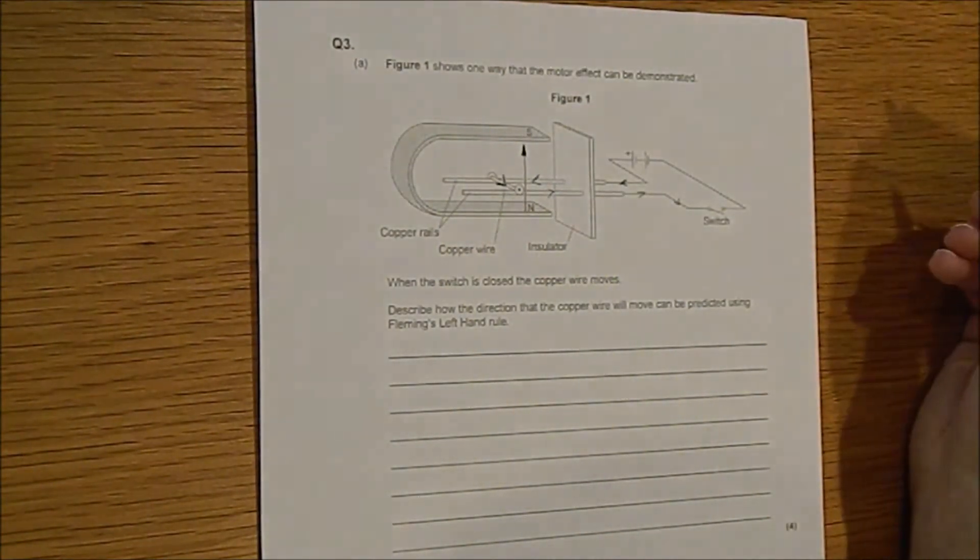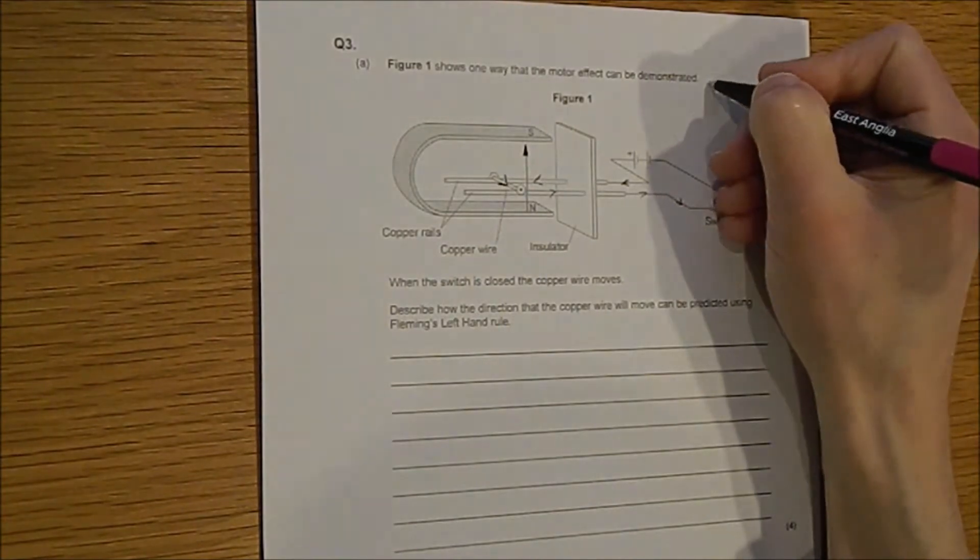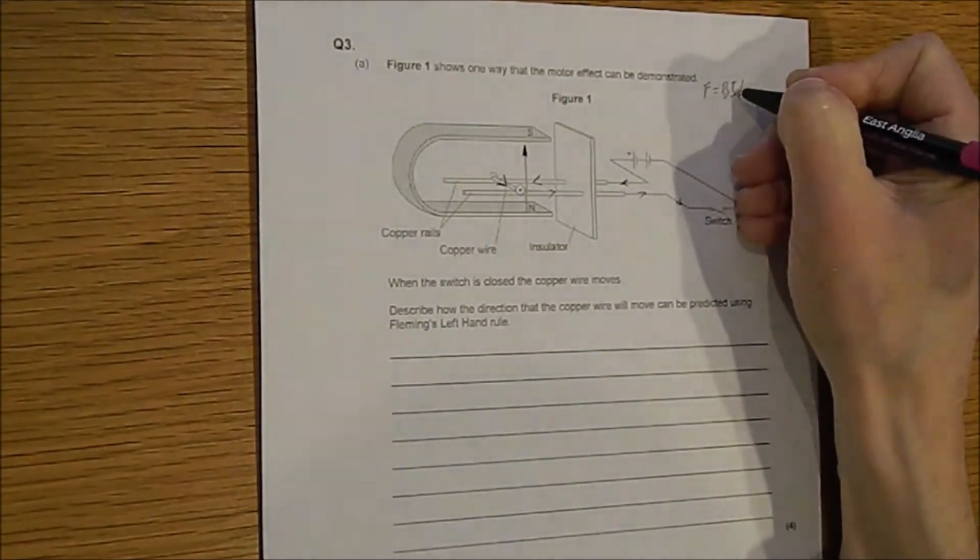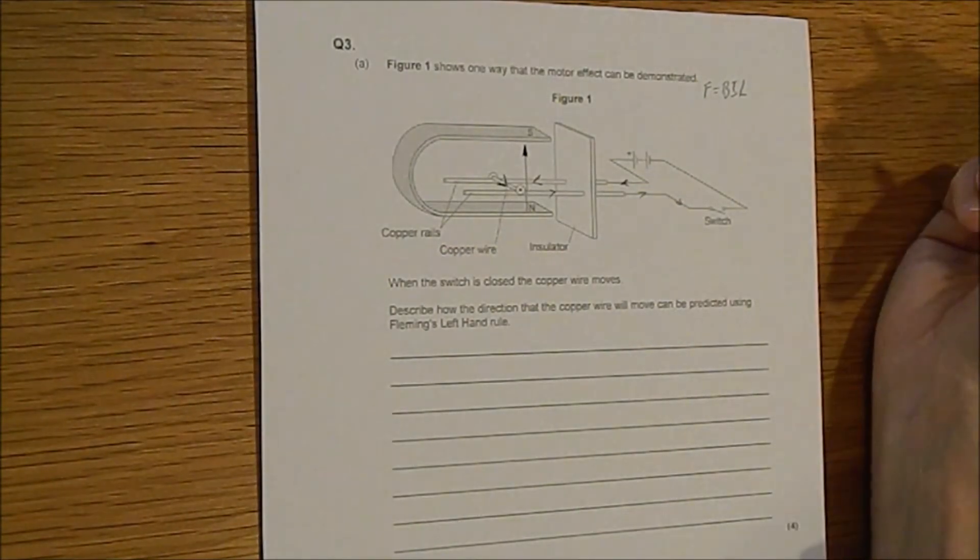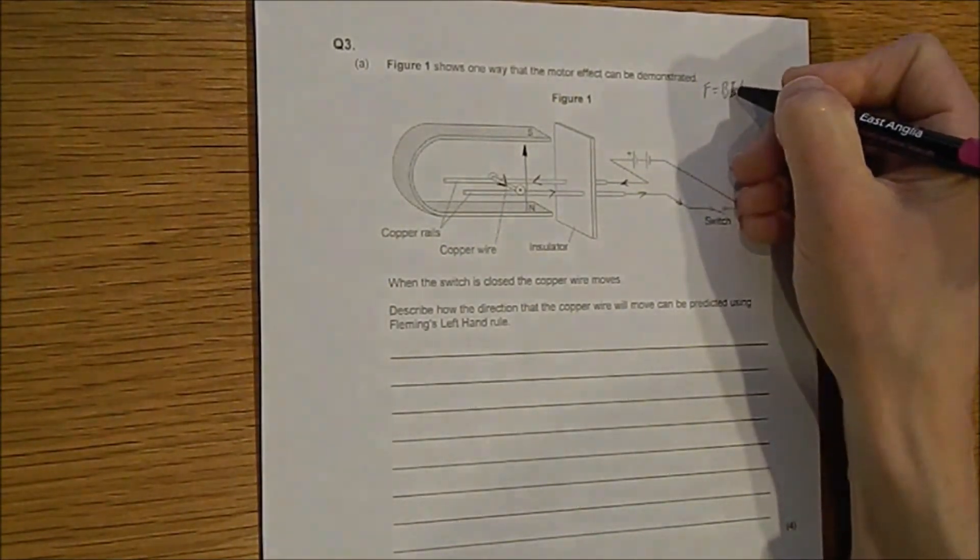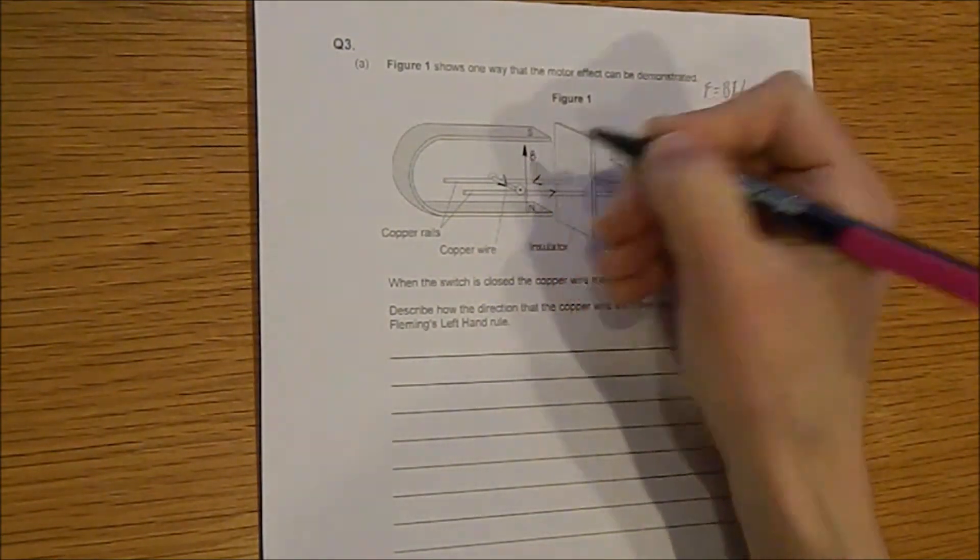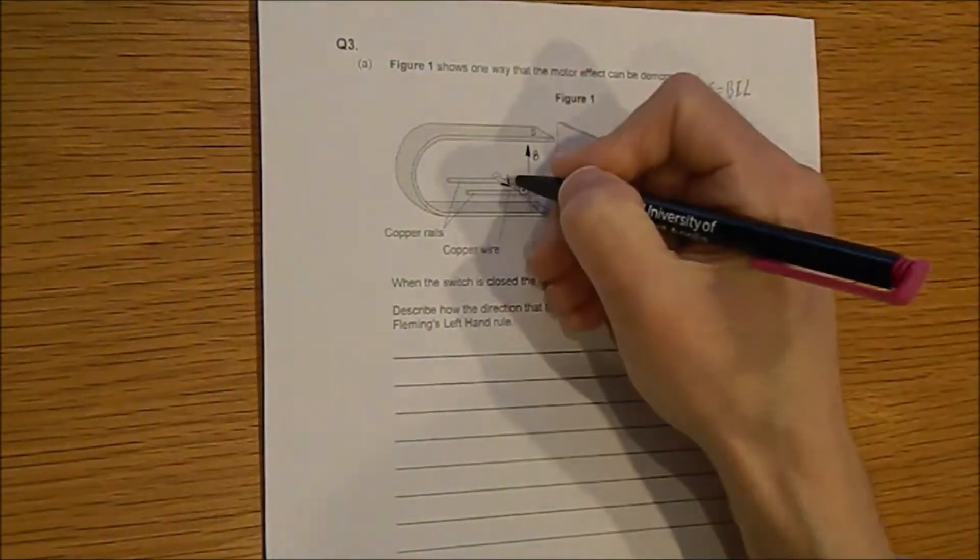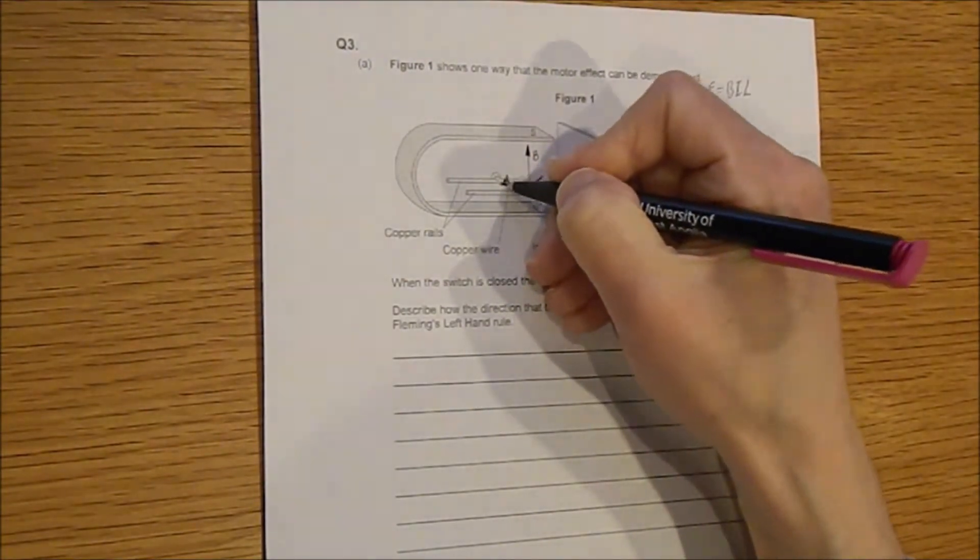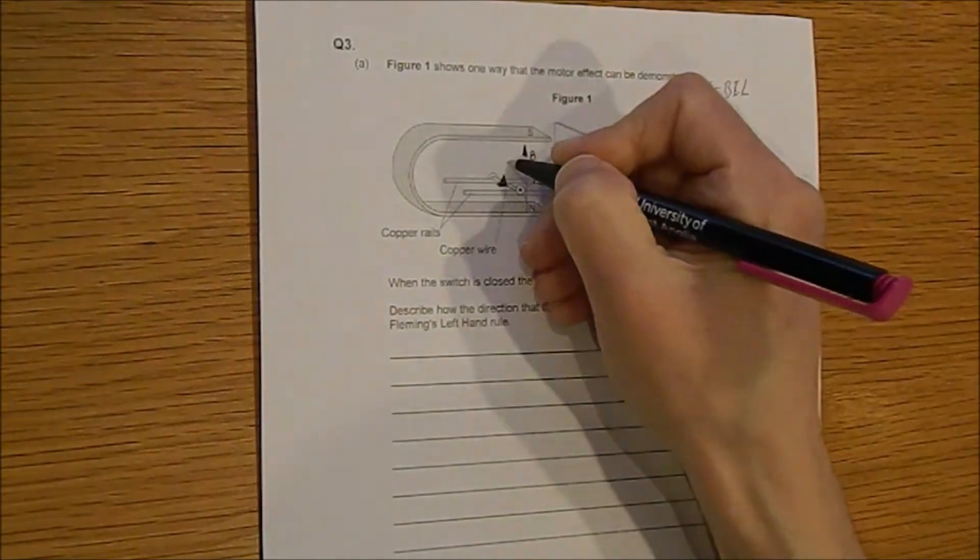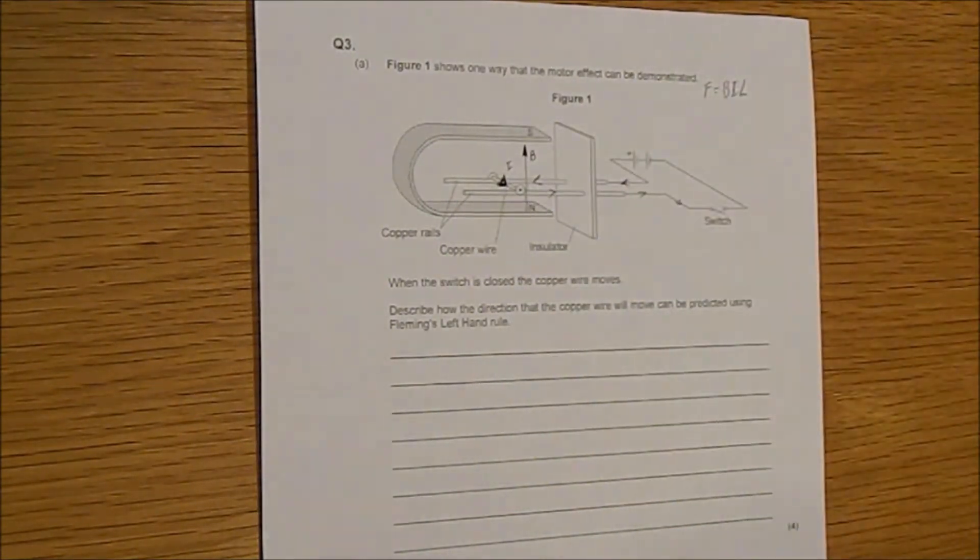Now we know that F equals BIL and you can use some of those symbols to help us out here just to keep the diagram a bit neater. So that is the magnetic field going upwards and maybe I'll turn that into a clear arrowhead. That is the current flowing through there.